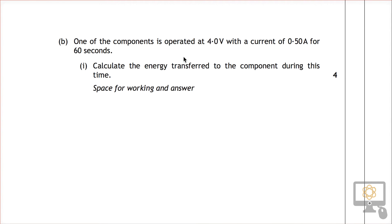It says one of the components is operated at 4 volts, so that's one of our key things that we need to bear in mind, with a current of 0.5 amps for 60 seconds. So we're given information about time and voltage and current. Calculate the energy transferred to the component during this time. So that's the key thing that we're looking for.